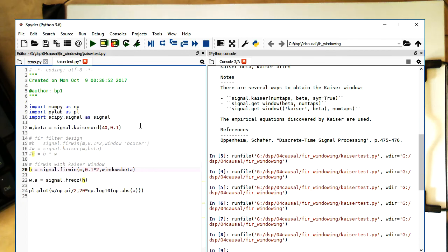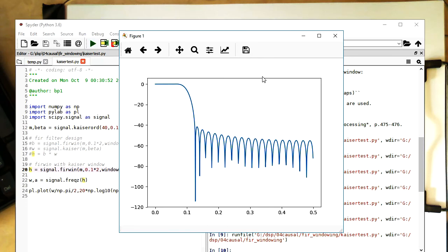And so we see we have essentially just two commands. With that one, we're getting our number of taps. And with that, we're generating our filter. So let's see if this works.